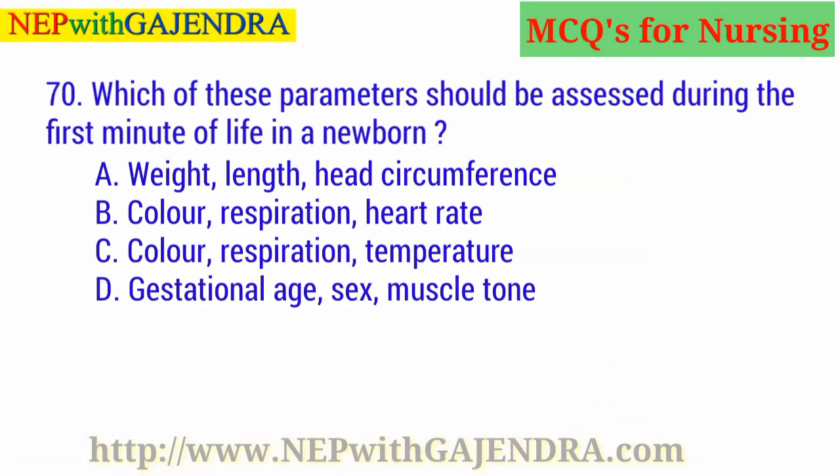Which of these parameters should be assessed during the first minute of life in a newborn? A. Weight, length, head circumference. B. Color, respiration, heart rate. C. Color, respiration, temperature. D. Gestational age, sex, muscle tone. The right answer is B: Color, respiration, heart rate.